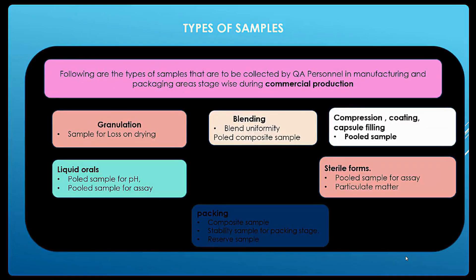There are different types of samples in a basic pharmaceutical company. First, oral solids — which have different stages as discussed in previous videos — including granulation stage, blending stage, compression, coating, capsule filling stage, liquid oral, sterile formulations, and packaging. At the granulation stage, the main sample collected is for Loss on Drying (LOD). At the blending stage, granules are blended, and samples are collected for particle size and blend uniformity.